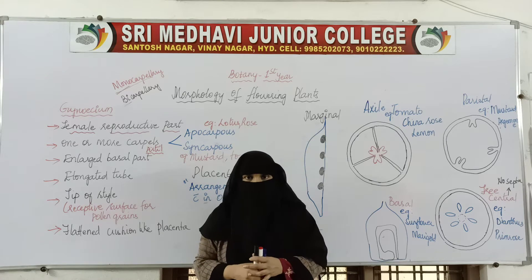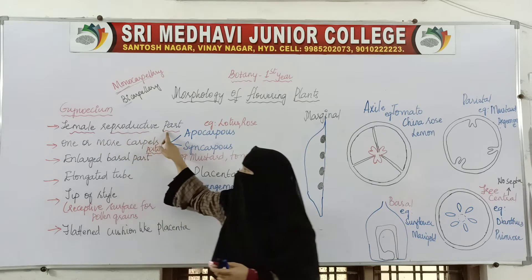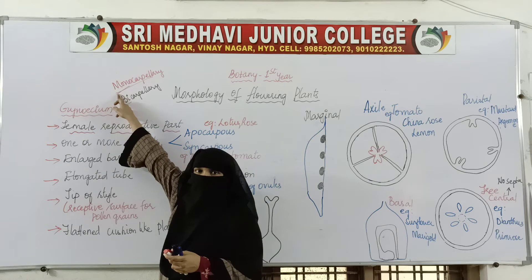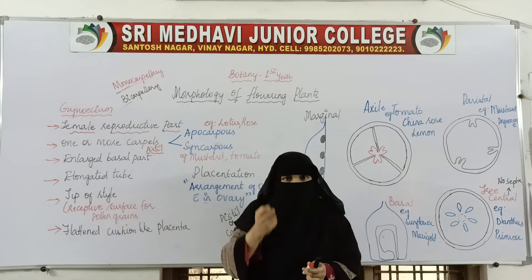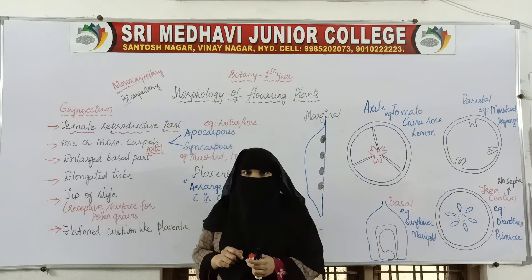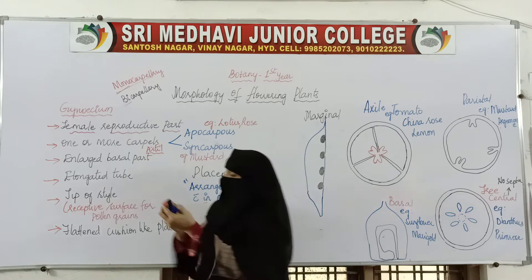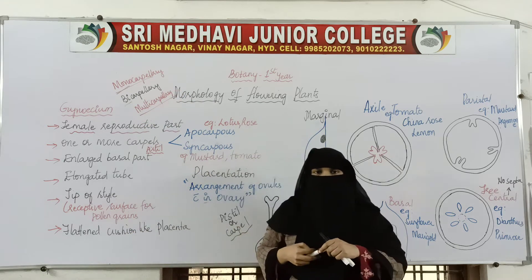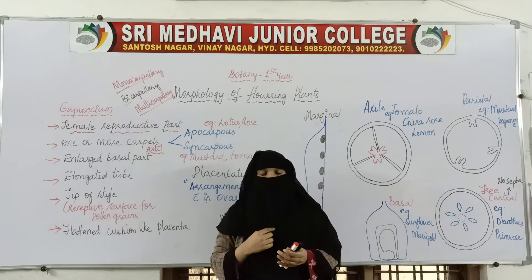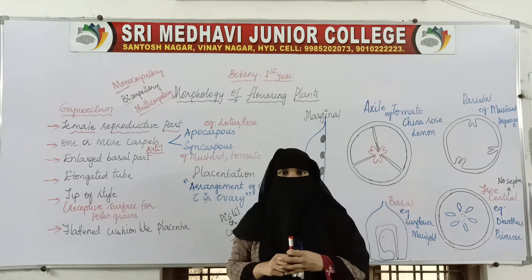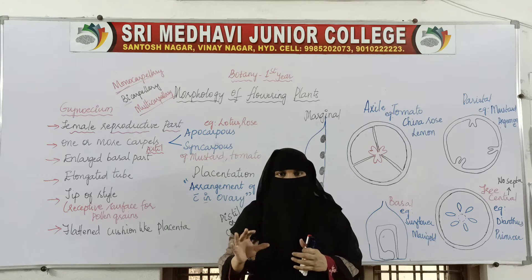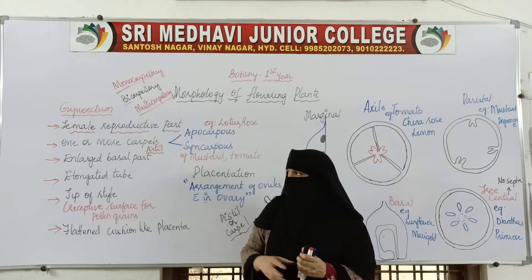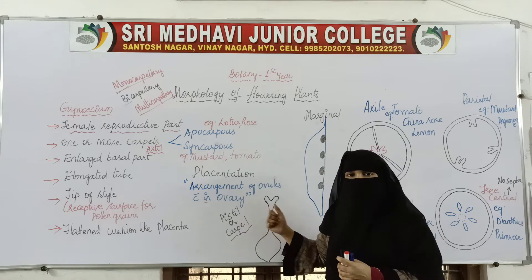To summarize: one carpel is monocarpellary, two carpels is bicarpellary, three is tricarpellary, four is tetracarpellary. If there are many carpels — more than two — we can also say multicarpellary. The gynoecium will have one carpel or more than one carpel.